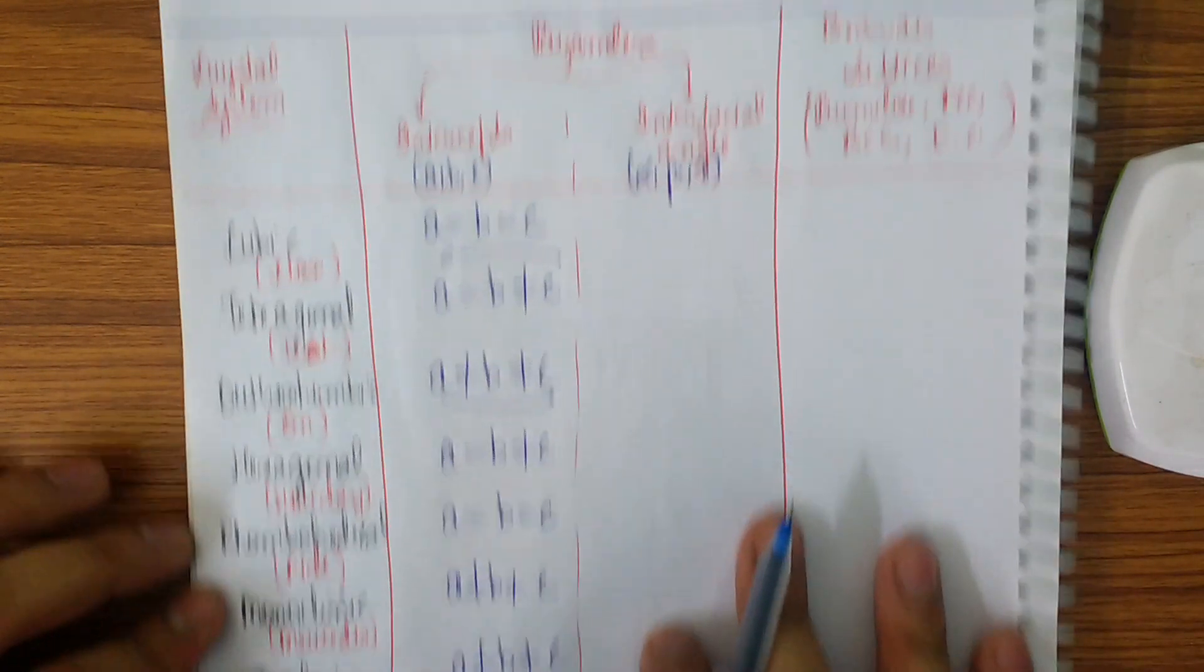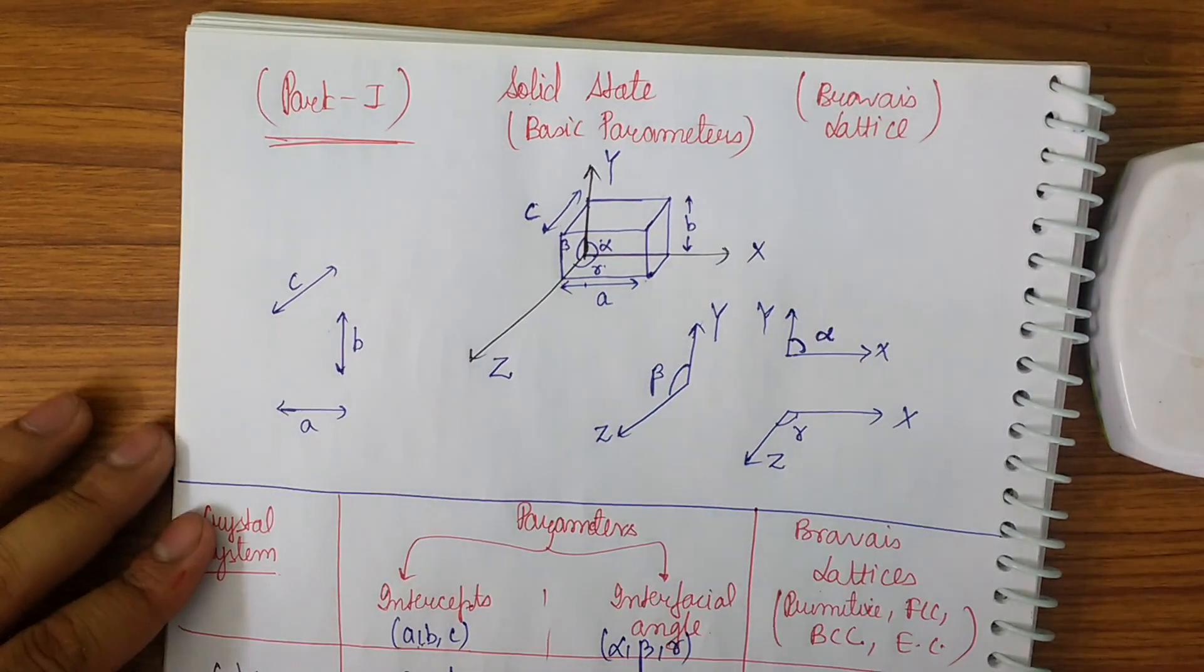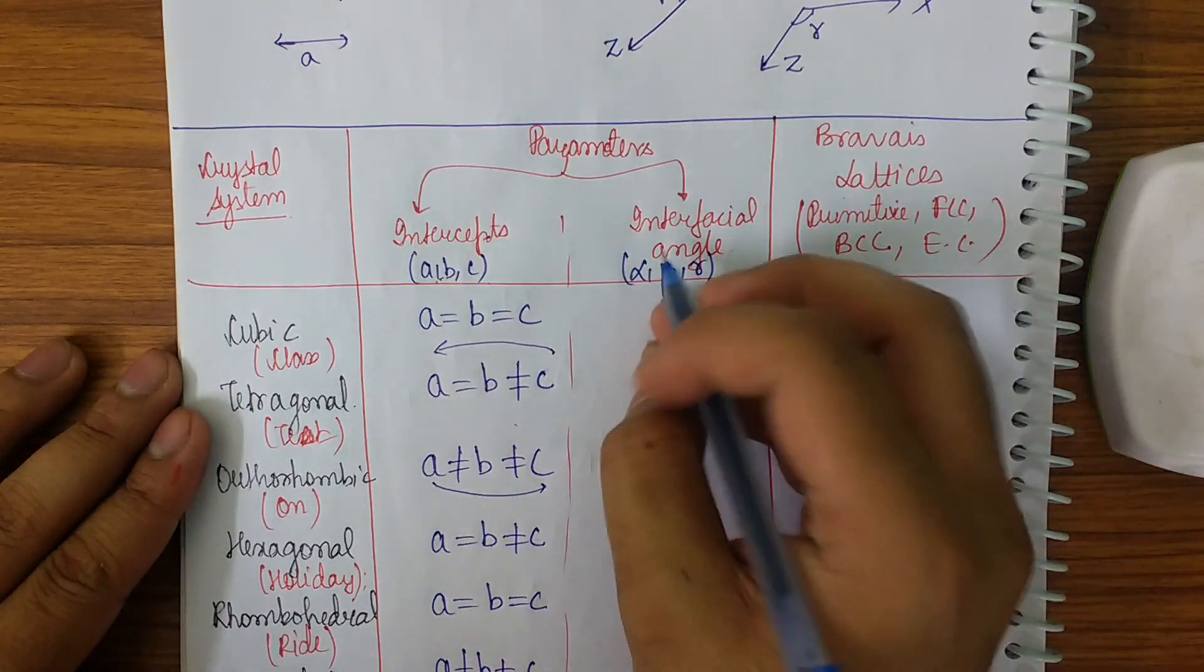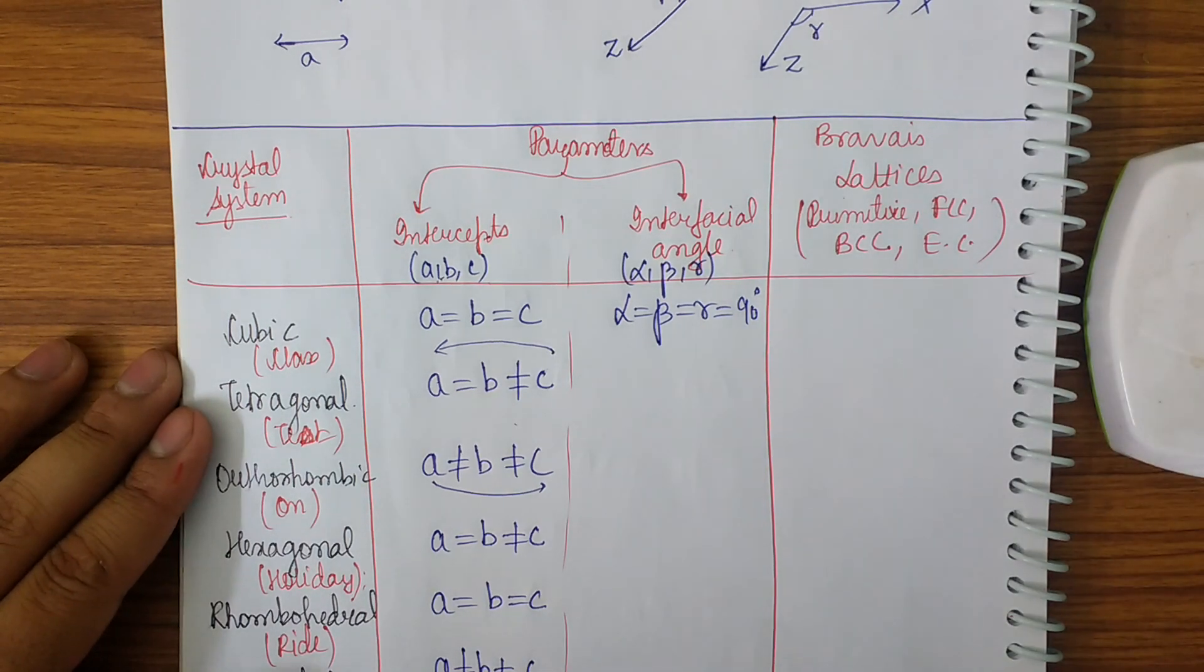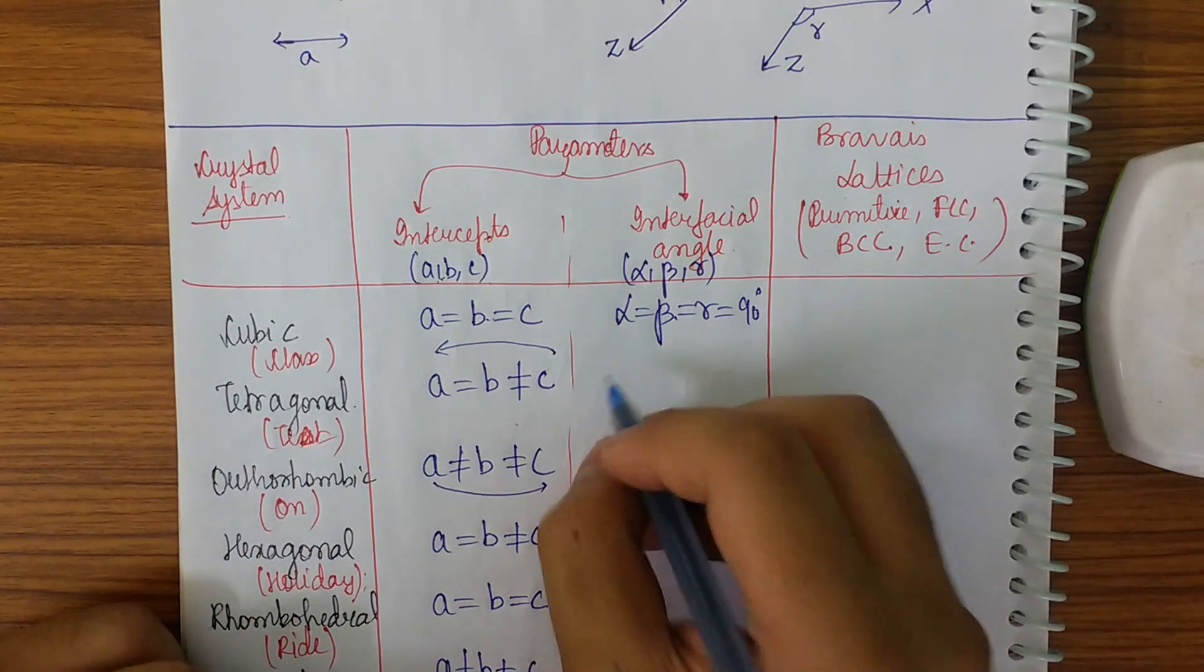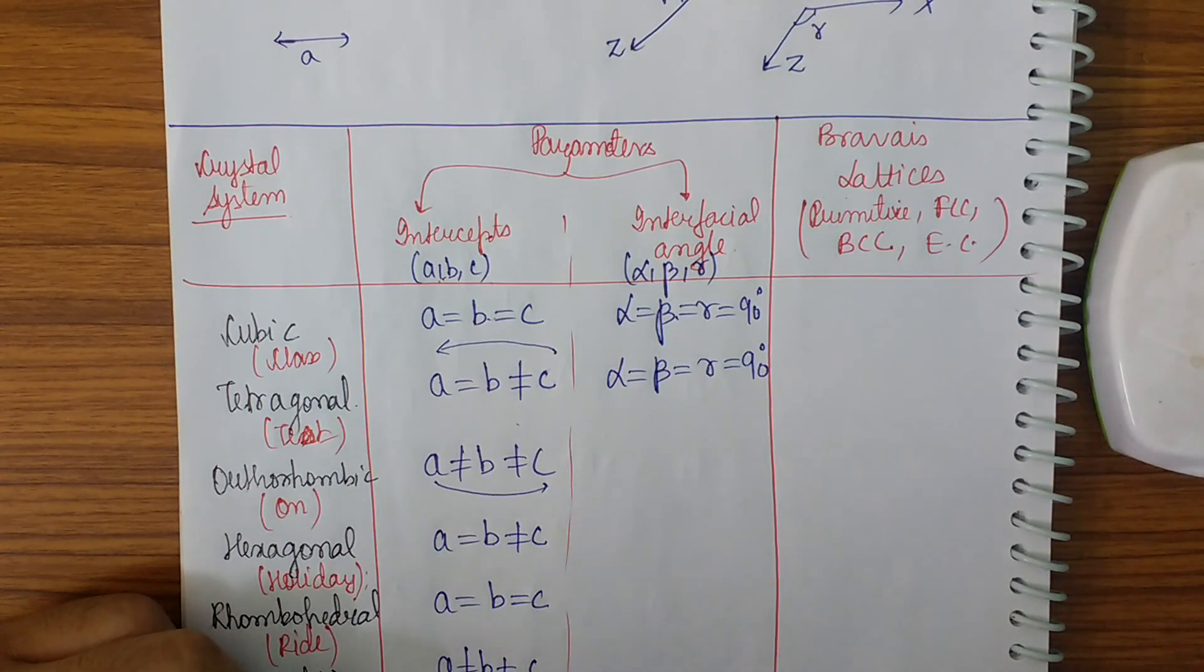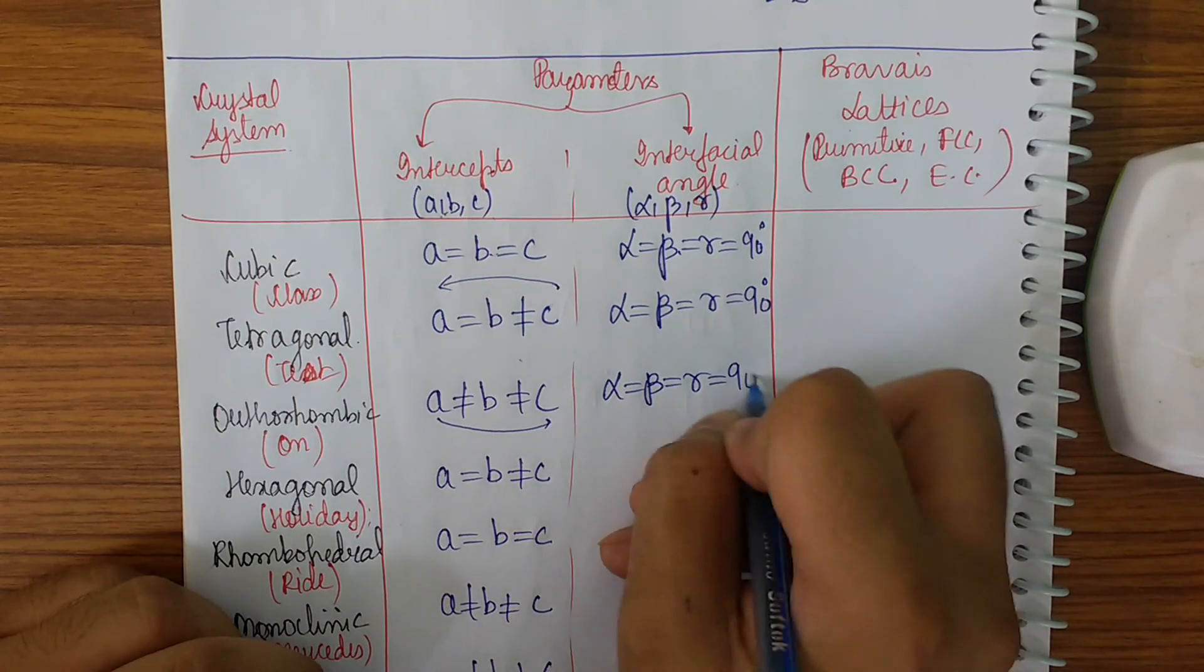Now let's get to the interfacial angle which is alpha, beta, and gamma. In the first case, the basic one, alpha is equal to beta is equal to gamma is equal to 90 degrees. This shape is a cube. Visualize with me. The next one will also be alpha is equal to beta is equal to gamma is equal to 90 degrees. In the third one also we will be getting alpha is equal to beta is equal to gamma is equal to 90 degrees.